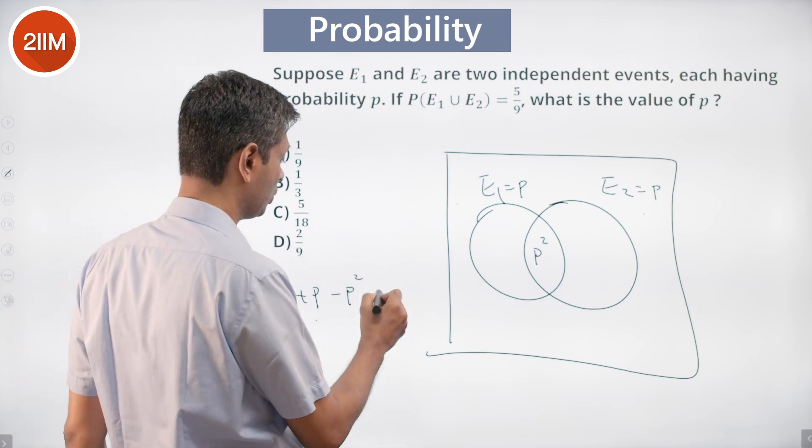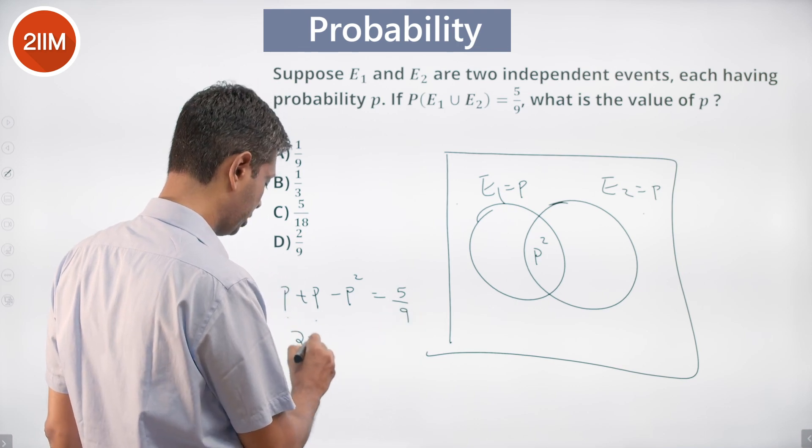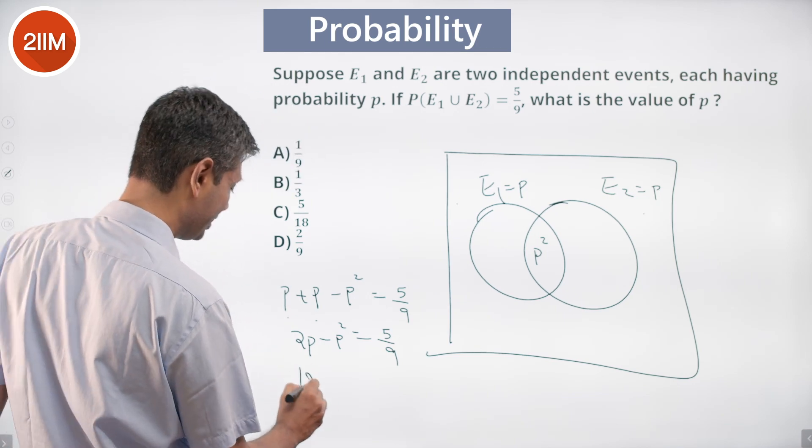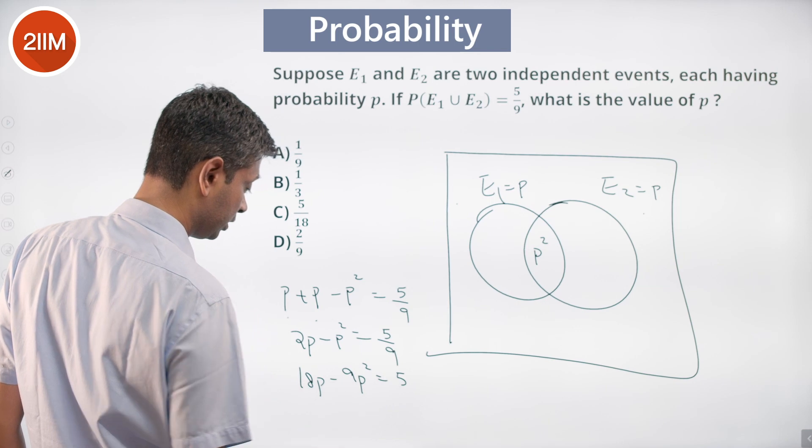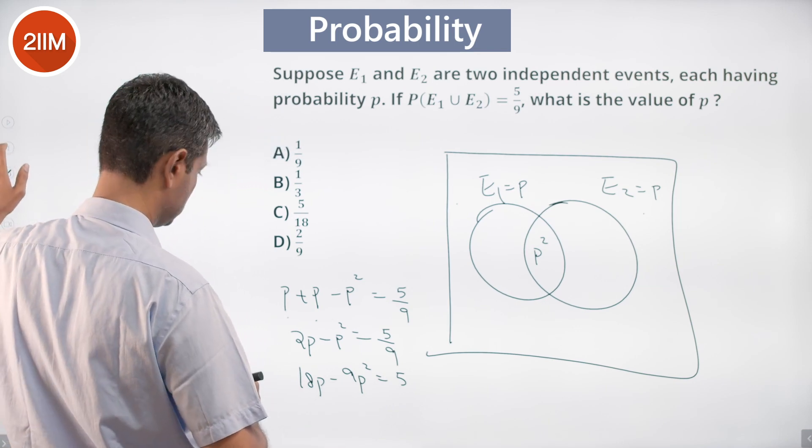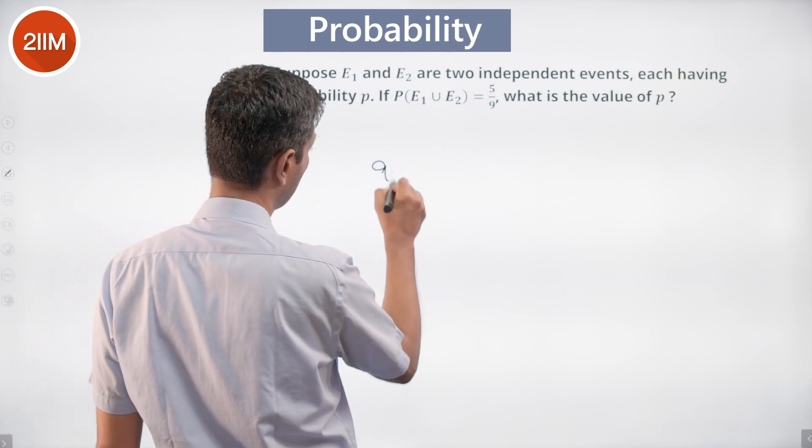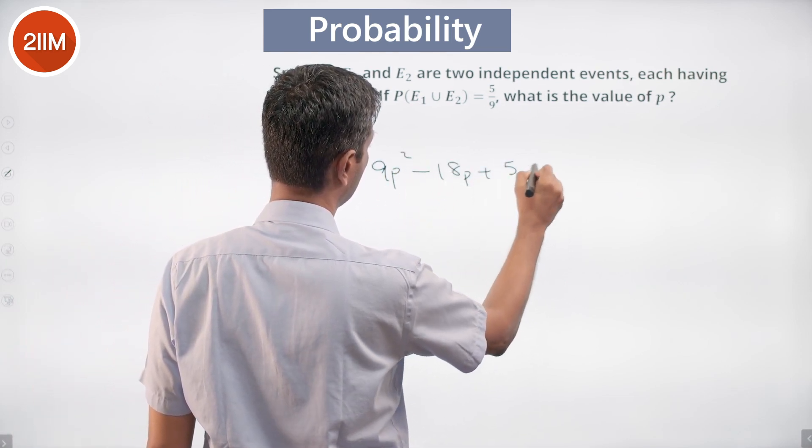So p plus p minus p square equals 5 by 9. 2p minus p square is 5 by 9. After that it is 18p minus 9p square equal to 5, or 9p square minus 18p plus 5 equal to 0.